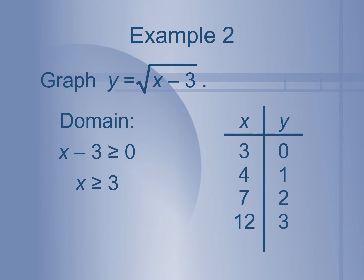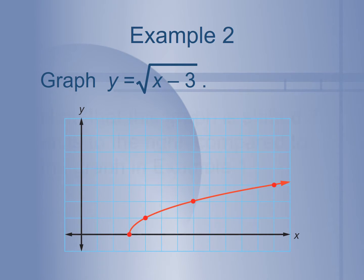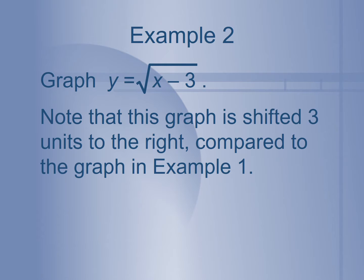We can also look at some table values — here are some that give us nice numbers. You can use the table on your graphing calculator to get nice points to graph. You can also just sketch the parent function knowing your domain is greater than or equal to 3, meaning you shift the graph 3 to the right. Remember: if you have x minus a number inside the radicand, it moves to the right; if you have x plus a number inside the radicand, it moves to the left.